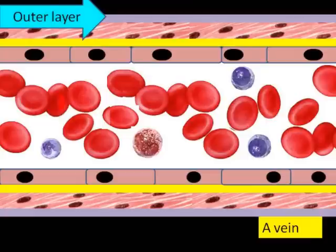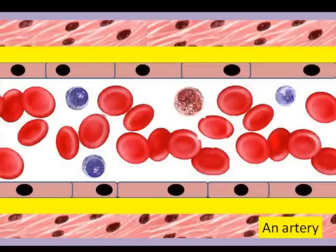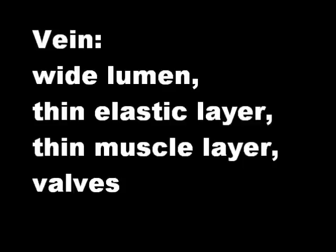Compare that to this picture of an artery. An artery has a relatively narrow lumen, not necessarily represented in this picture, but the key items are it has a much thicker elastic layer and a much thicker muscular layer. This is to allow it to expand and contract, to withstand the pressure from the blood when the heart contracts.